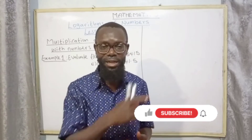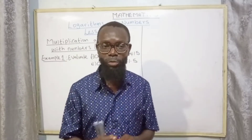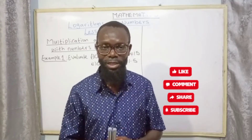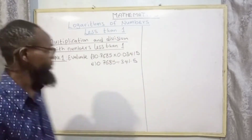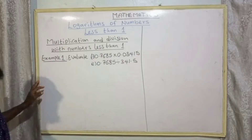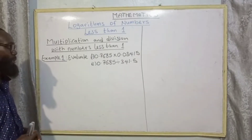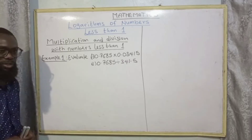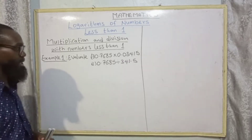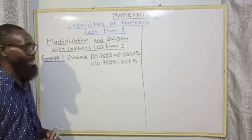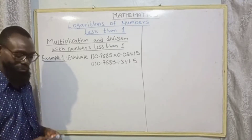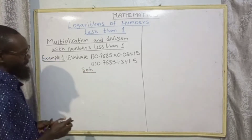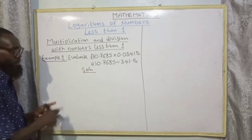Before we dive into this, if you are a new member on this channel kindly subscribe and click the notification bell for my subsequent content, and do not forget to share with others. Let's move on. Multiplication and division with numbers less than one. Example one: evaluate 0.7685 multiplied by 0.03414.